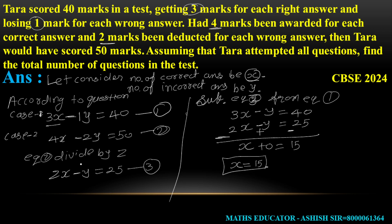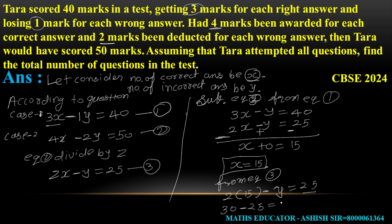Now, from Equation 3: 2(15) - Y = 25। 30 - Y = 25। Y = 30 - 25। तो Y is equal to 5।